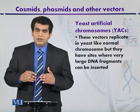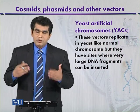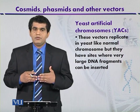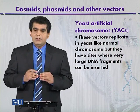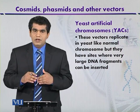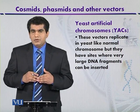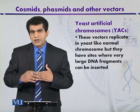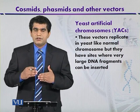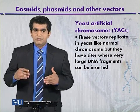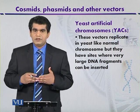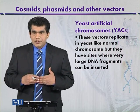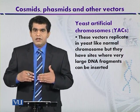This recombinant yeast artificial chromosome can then be inserted into the yeast cell. If you remove the cell wall of the yeast, it is very easy to infect. If we want to clone larger DNA fragments for their separation, we can use pulsed field gel electrophoresis. This is similar to regular gel electrophoresis, but it is used to separate larger DNA fragments in an agarose gel.